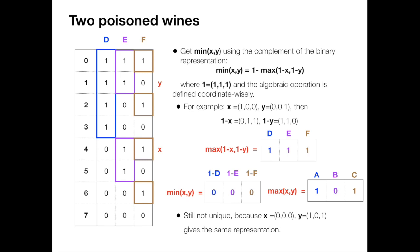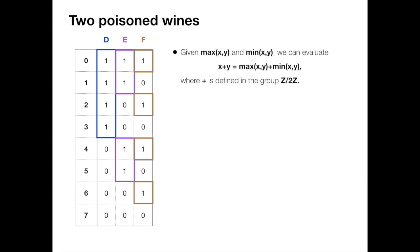Then what's next? Let's summarize what we have already. By using six drinks we are able to construct the max and min between the binary representation, so we can sum them up to get x plus y, where the addition is defined in the group Z over 2Z.